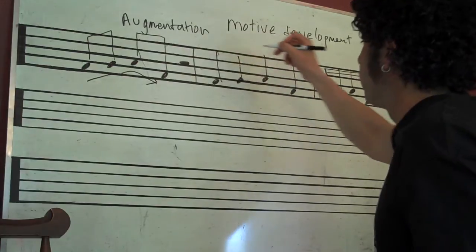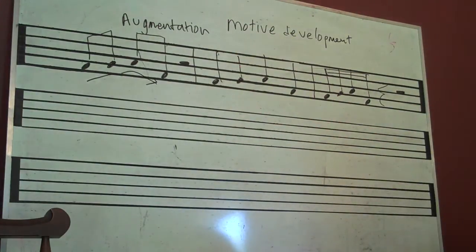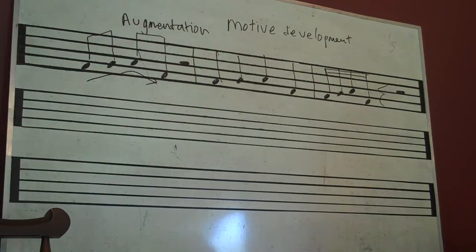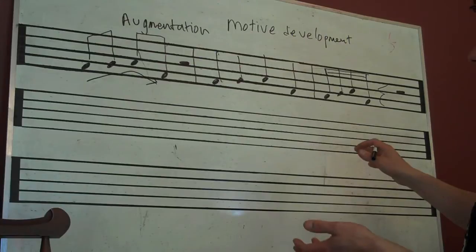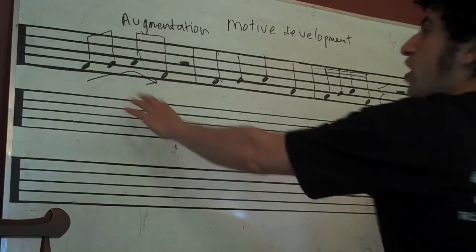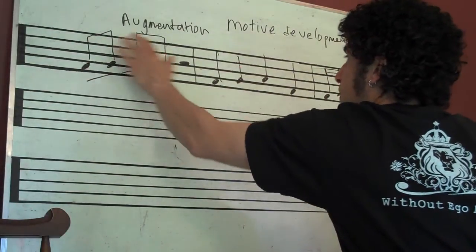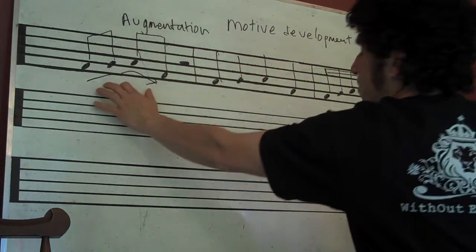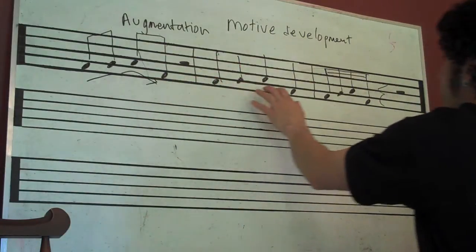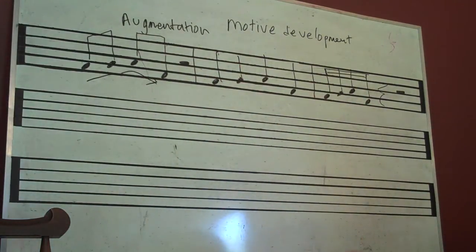Then you've got in this next bar the same notes, except it's quarter notes. And then in the third bar, you've got sixteenths. In this first one, we're just taking a shape and changing from eighth notes to quarters to sixteenths. The shape stays the same except the rhythm is different. That's augmentation.